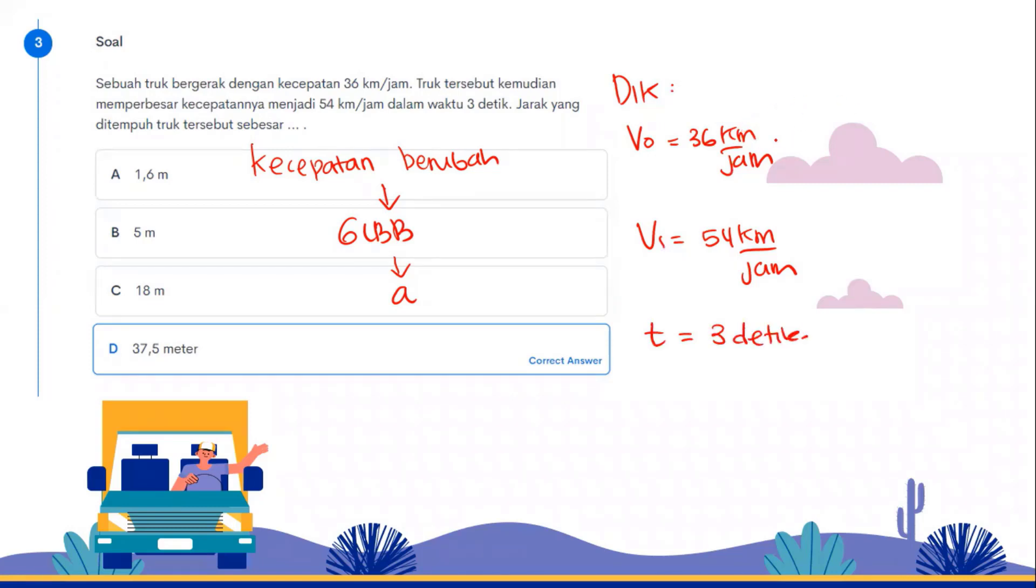Here, remember, we convert to meters per second because velocity must be in meters per second. So kilometers to meters is times 1000, hours to seconds is times 3600. The result is 10 meters per second. The second one is the same way, divided by 3600, result is 15 meters per second. If you simplify. What's being asked is distance. For GLBB, finding distance uses a long formula: S equals V0T plus half times A times T squared. We input V0 is 10, time is 3, plus half A. We need to find A first because it's not given in the problem. Let's find A.